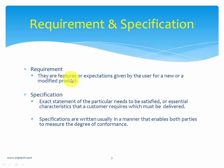Requirements are features or expectations given by the user for a new or modified product. If a user wants to develop a software application, he has some expectations towards that particular application — those expectations are called requirements. As an analogy, if you want to build a house, you are probably going to give some requirements, such as: your house would have a balcony, a hall, and two bedrooms. Requirements like these can become endless, but these requirements are not yet clear.